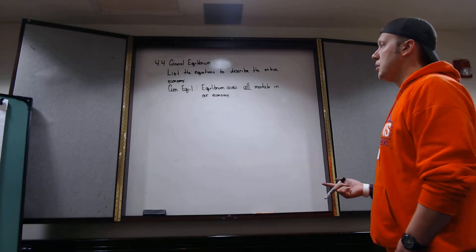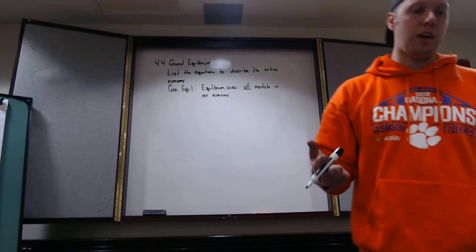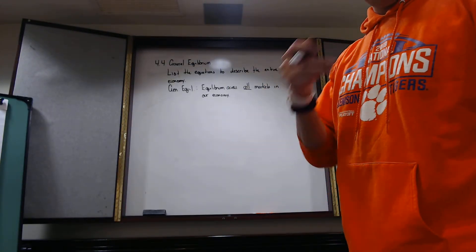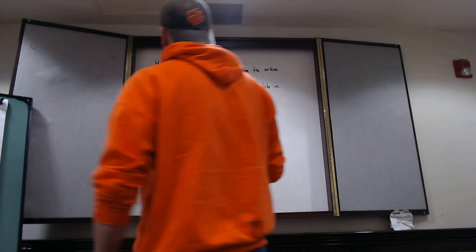So we're going to need to include the resource constraint. We're going to need to include the Euler equation. We're going to need to include the law of motion of capital. And we're going to need to include the production function. By doing that, by including all of those equations, we close our model out.